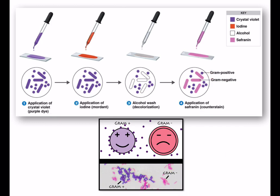The reason gram positive bacteria do not get decolorized is the thick peptidoglycan layer, which makes them retain the primary stain crystal violet, so they appear purple or blue in color. Gram negative bacteria do not have a thick peptidoglycan layer, so they lose the primary stain and take up the counter stain, safranin.